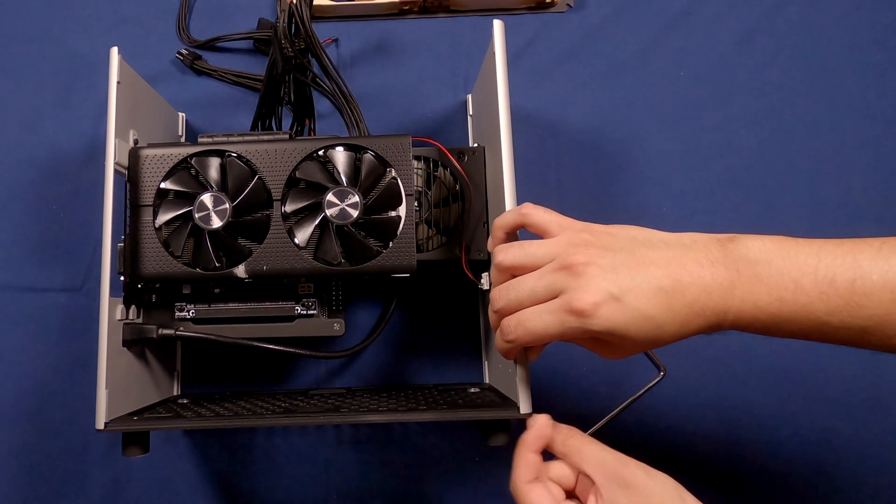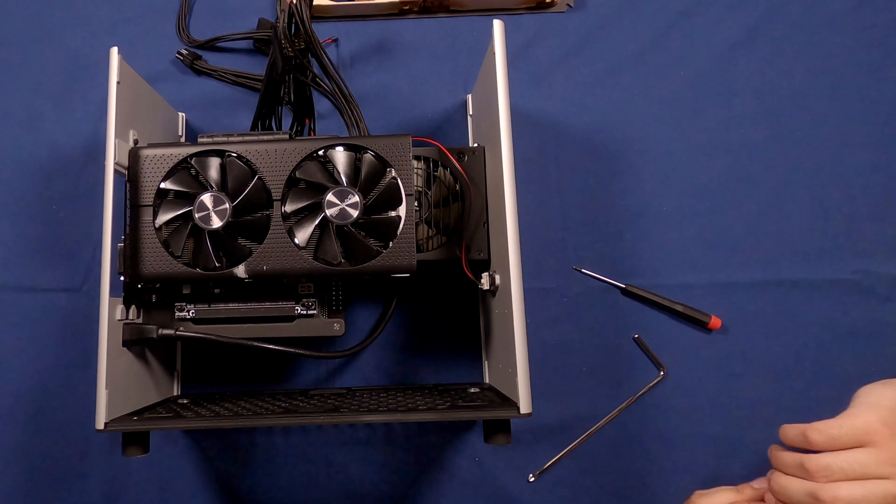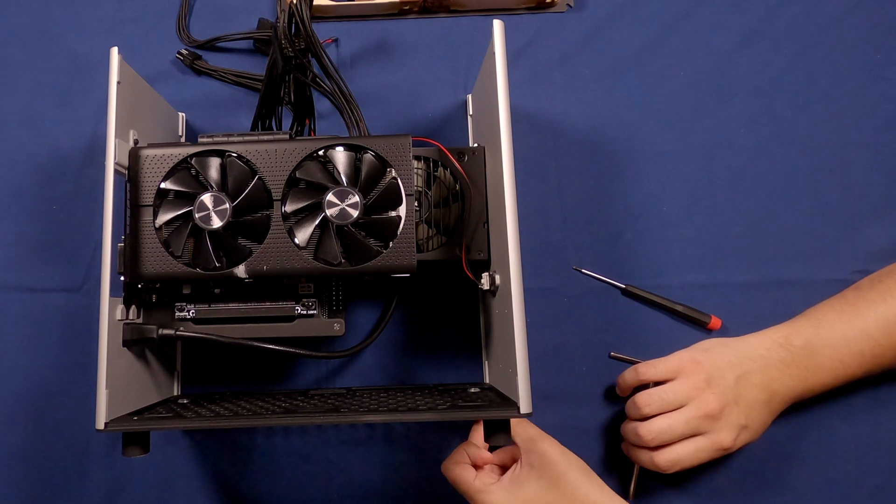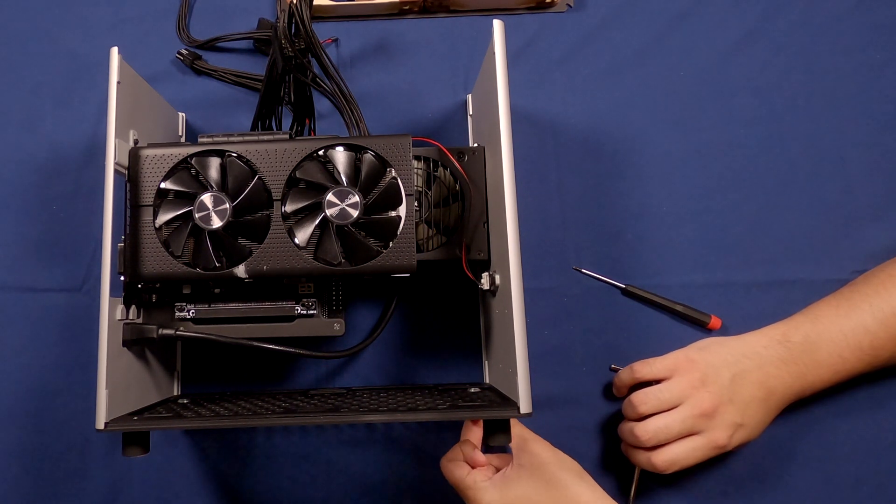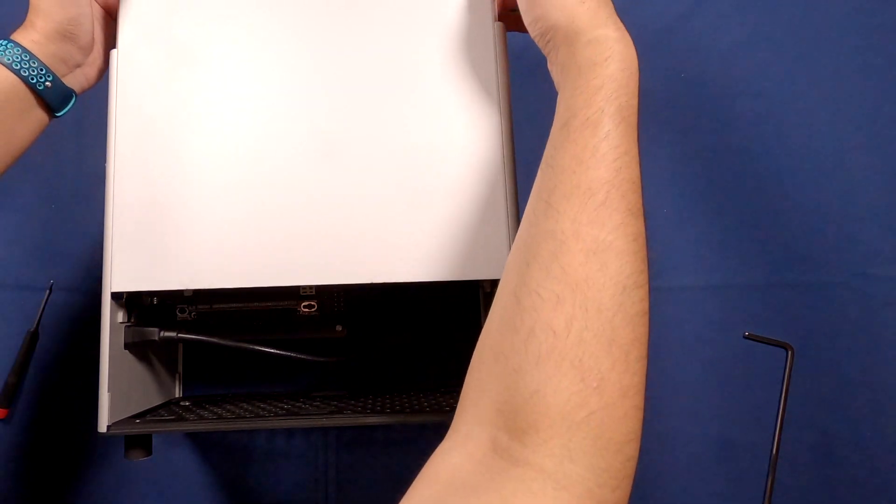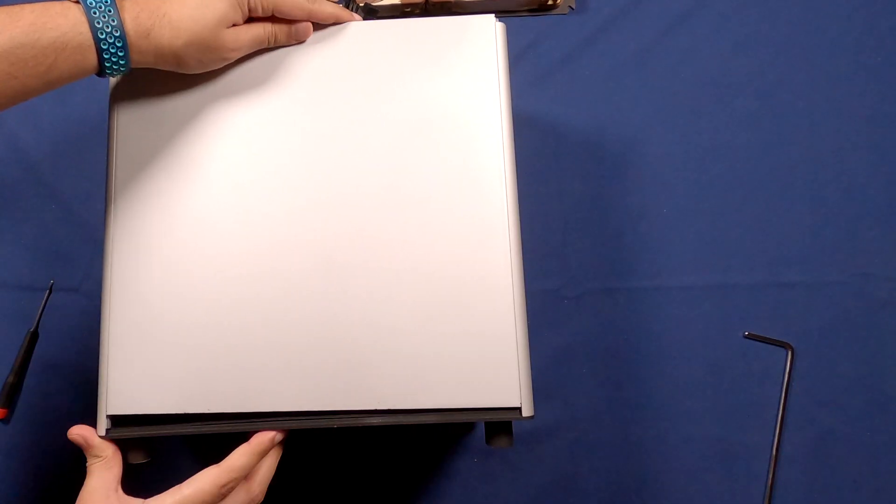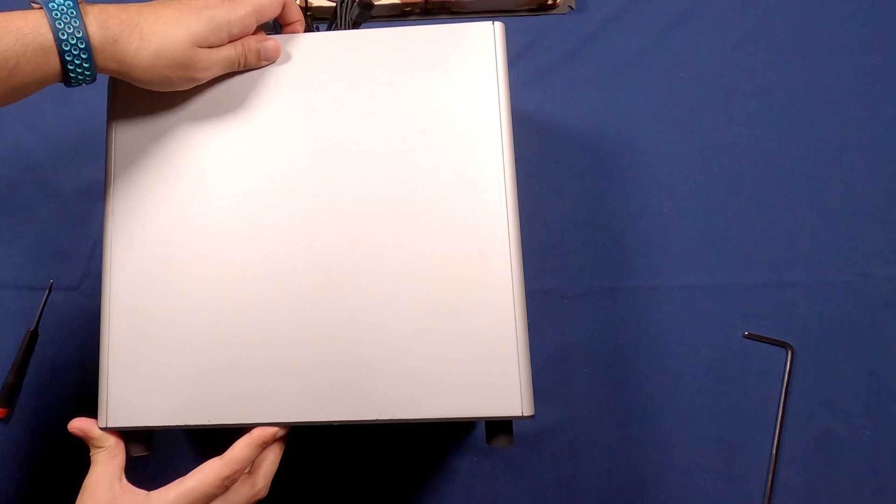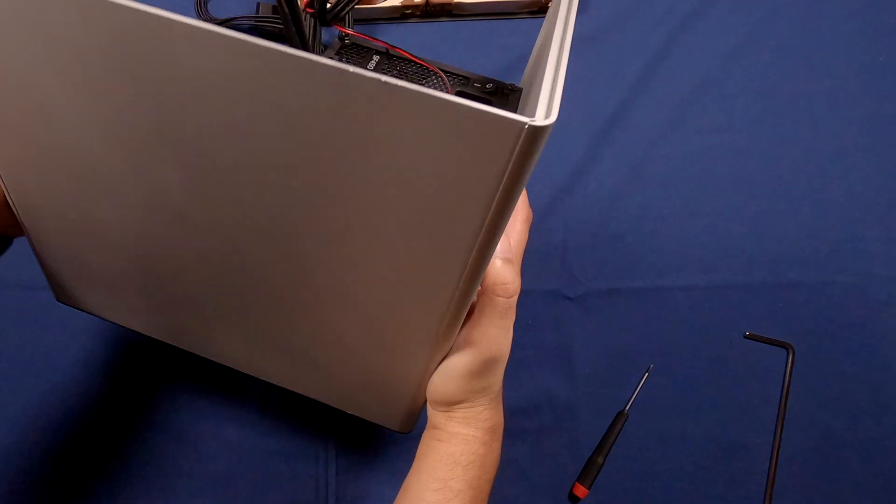Once you've done that and everything is ready to go it's time to put the side panels onto the case. At this point you're going to put the first side panel into position and once you do you can flip the entire thing over.